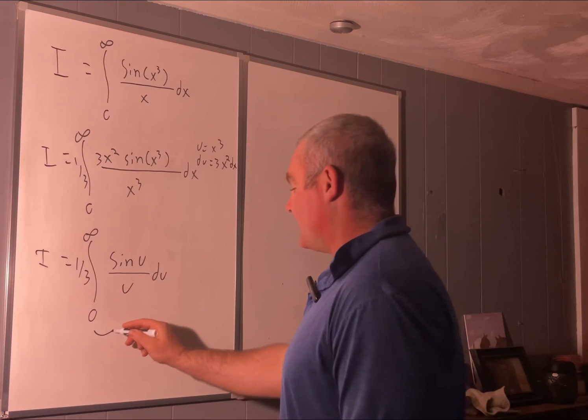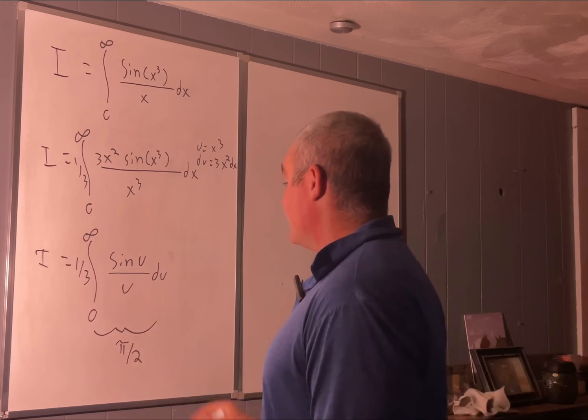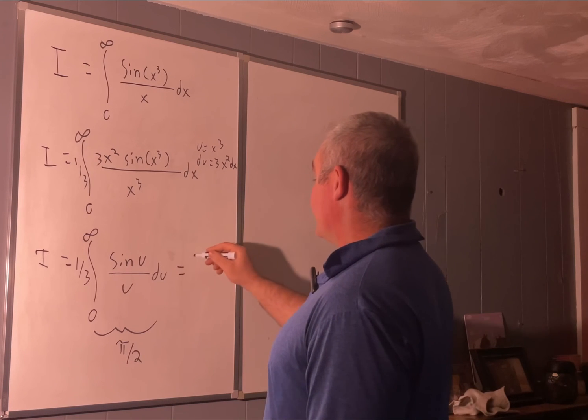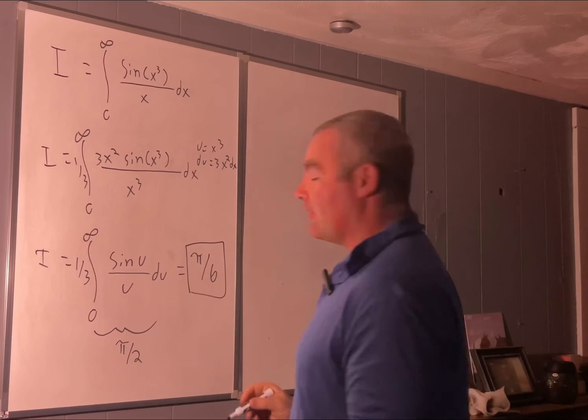know that this thing without the one third is equal to pi over 2, so the entire thing is equal to pi over 6. There you go, hope you enjoyed that.